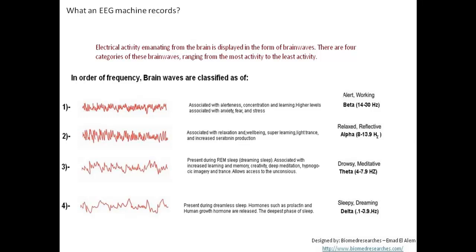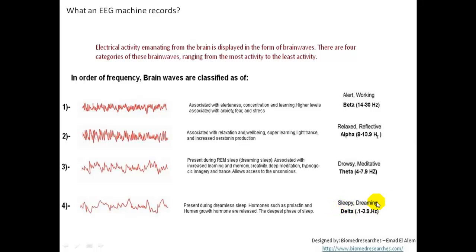Let us review the frequencies of brain waves in order of frequency. Beta goes from 14 to 30 Hz, alpha from 8 to 13.9 Hz, theta from 4 to 8 Hz, and delta from 1 to 3.9 Hz. Alpha is noticed in relaxed, reflective states; beta in relaxed and alert or working states; theta in drowsy or meditative states; and delta in sleepy or dreaming states.